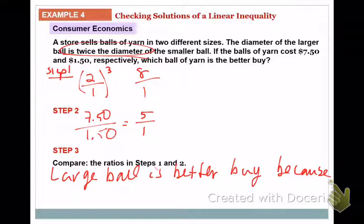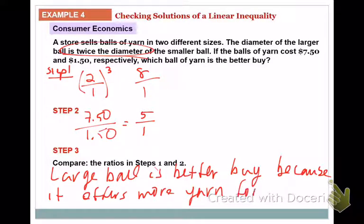The large ball is the better buy because it offers more yarn for the price. That's another way we can use scale factors and similar solids — the ratio of the volume is the scale factor cubed. Homework is out in Canvas; give it a shot and have it done by next time.